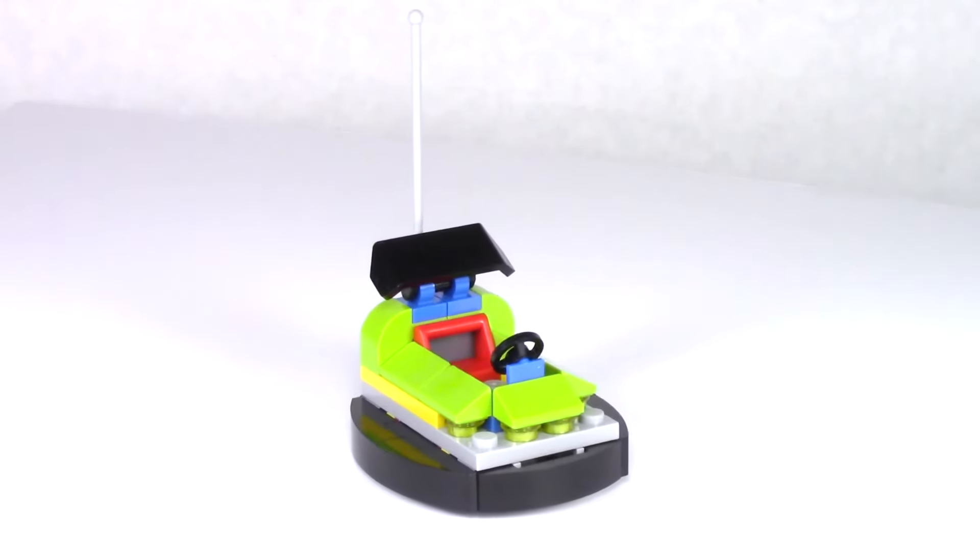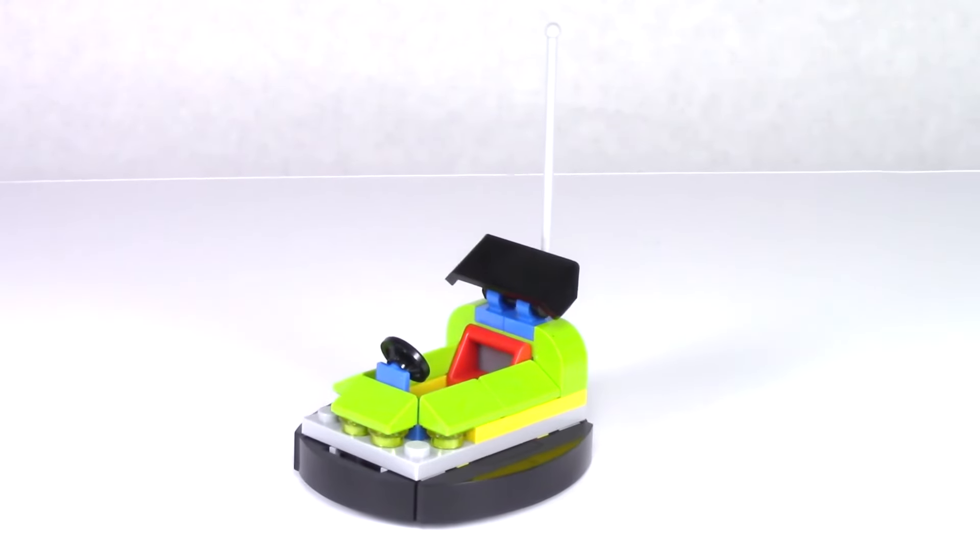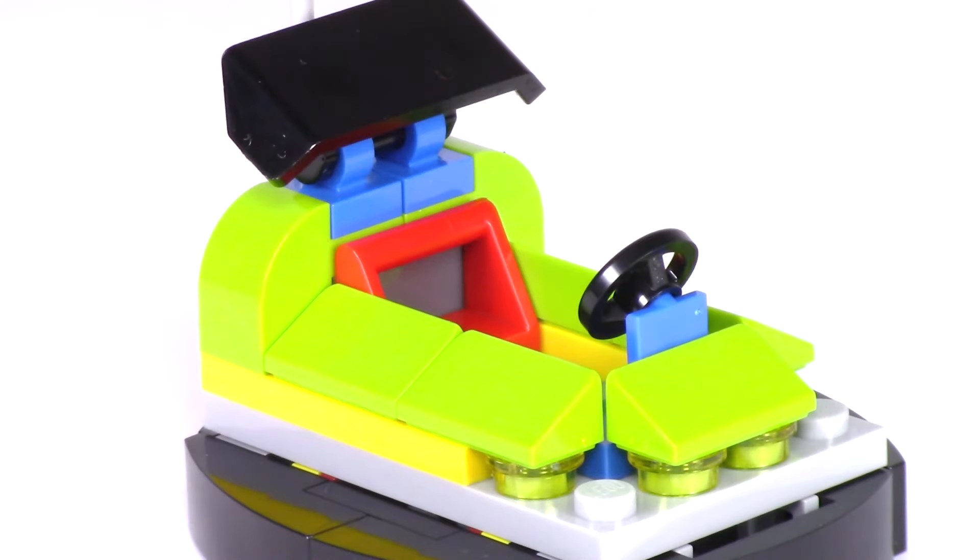And here we have the Joker bumper car. You can see this is a nice small build, but it really captures that great look. At the very front we have some trans yellow pieces, perhaps to be headlights. As we work our way up, we have some nice lime green colored slopes, as well as those lime green arches, to create this really nice bright bumper car shape. This set does a nice job of incorporating a few different colors to give it that really fun look.